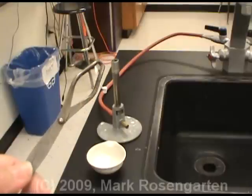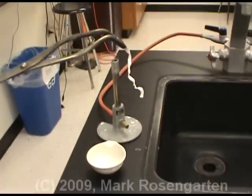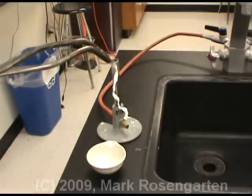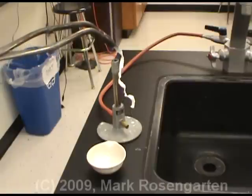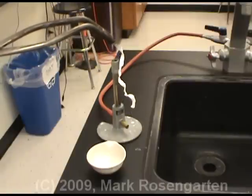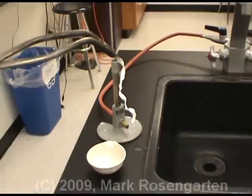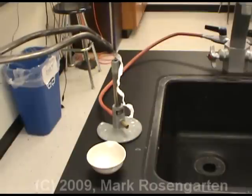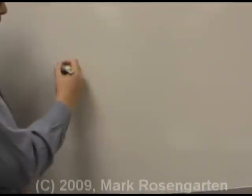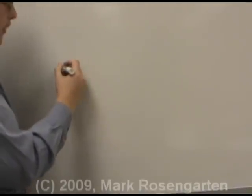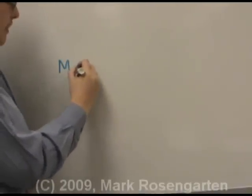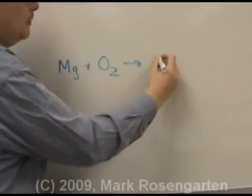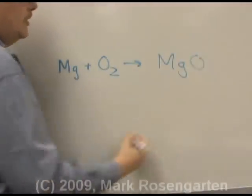Take a look at what we have left after the reaction is completed. It's no longer a nice metallic strip of magnesium. It's now magnesium oxide — a synthesis reaction where magnesium is chemically combined with oxygen to form magnesium oxide. The formula for this reaction is magnesium plus oxygen forms magnesium oxide.